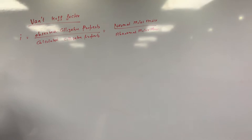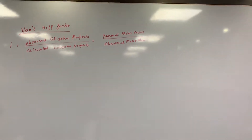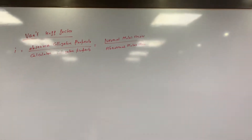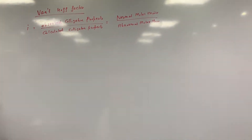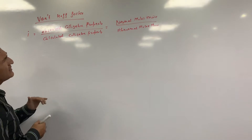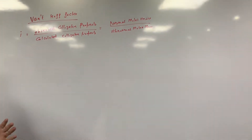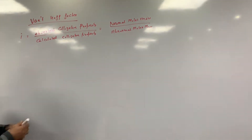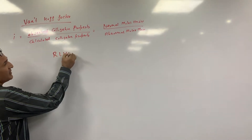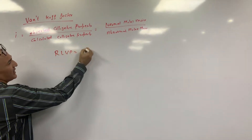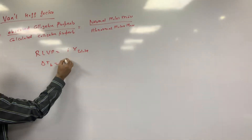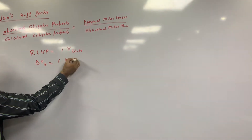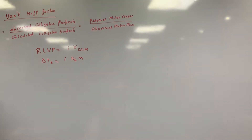Last class we did some simple questions where i was just equal to the number of molecules or particles coming after dissociation, and we defined it for a strong electrolyte. Then I told you, in all the colligative properties just put i — for example, relative lowering of boiling point becomes i × X_solute, ΔTb becomes i × Kb × m — you just have to put i in each formula.